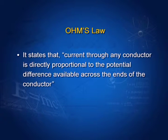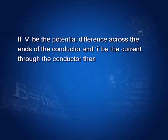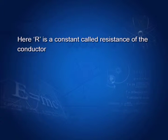Ohm's Law states that the current through any conductor is directly proportional to the potential difference available across the ends of the conductor, provided all physical conditions like temperature and stress remain constant. In the diagram, let a conductor be connected across the ends of a battery. If V is the potential difference and I is the current through the conductor, then I is directly proportional to V. Putting a coefficient of proportionality R, we get V = IR. Here R is called resistance.